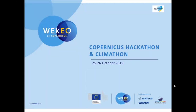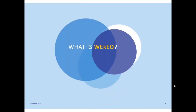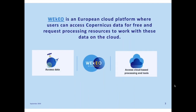Hello, welcome to this webinar, which is part of the pre-hack event of the Copernicus Climathon Hackathon. Have you ever heard about Wikeo? In short, Wikeo is a European cloud platform where users can access Copernicus data for free and request processing resources to work with this data on the cloud. Copernicus is the Earth Observation Monitoring Program gathering data about the Earth's climate, the ocean, the land, and the atmosphere.